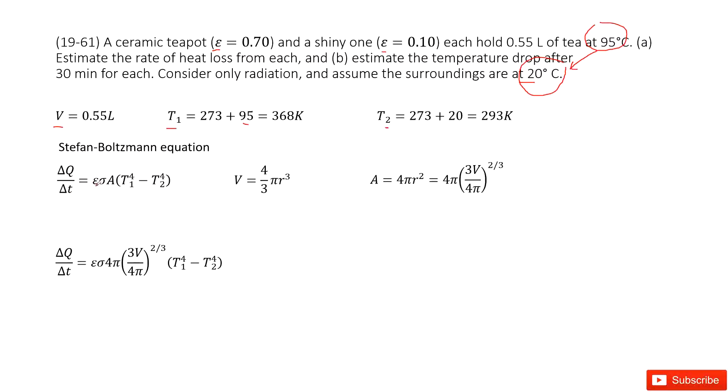In the Stefan-Boltzmann equation, epsilon is the emissivity, which is given. Sigma is a constant. A is surface area, and T₁ and T₂ are given. We need to find the surface area. Considering the teapot as a sphere, its surface is 4πr². We need to find the radius first from the given volume.